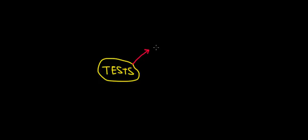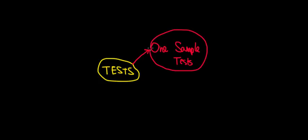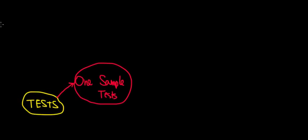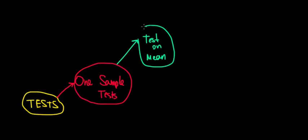In the upcoming videos we're going to go through two-sample tests. For one-sample tests, in this type of course we usually have a test on means and a test on proportions. We're going to subdivide this into two: we're going to have test on one sample mean, and then below it we're going to have a test on proportion, which we'll discuss in the next video.